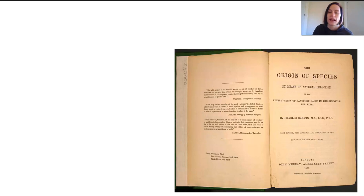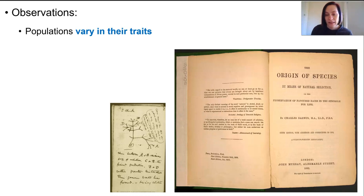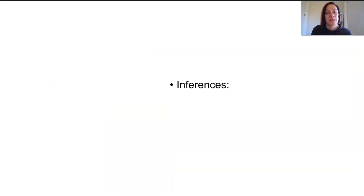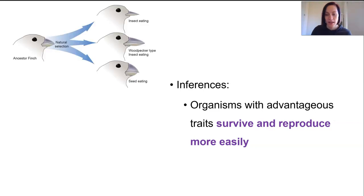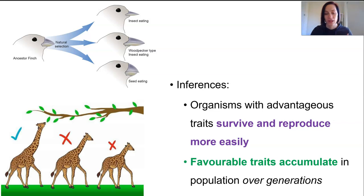They published a joint scientific paper in 1858 arguing for evolution by natural selection — pretty controversial ideas at the time. A year later, Darwin published his long-awaited work on the origin of species. The main observations were that populations vary in their traits, and that species produce more offspring than the environment can support, so most will fail to survive or reproduce. From these observations came inferences: individuals with traits advantageous to their specific environment were able to survive and reproduce more easily, and this unequal ability to reproduce means favorable traits accumulate in a population over many generations.